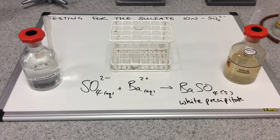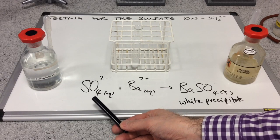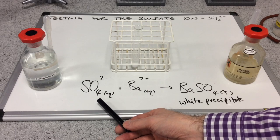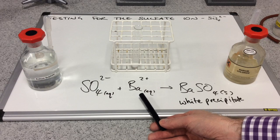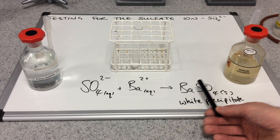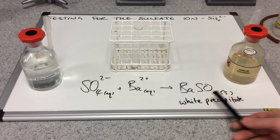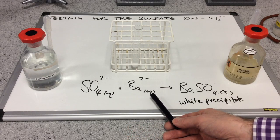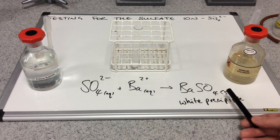There's the ion equation for the reaction taking place. The aqueous sulfate ions from the sodium sulfate solution have combined with the aqueous barium ions from the barium chloride solution, and they've combined to make the insoluble barium sulfate — that's why it comes out as a precipitate. Just be careful with the state symbols, very important in this type of reaction: aqueous and aqueous going to solid.